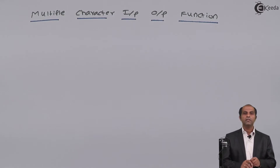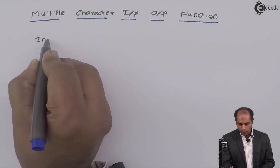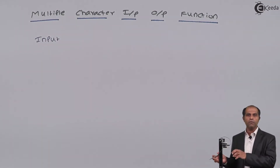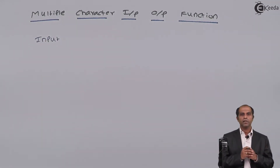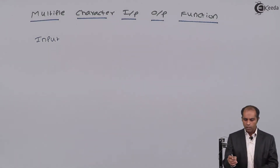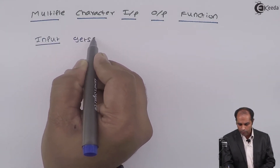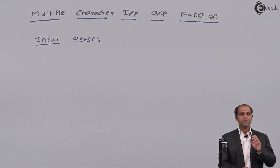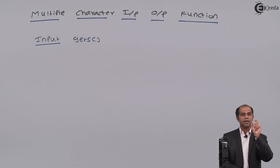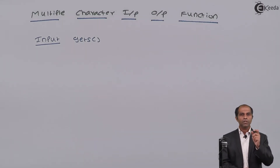The first function is the input function. Input always goes from the device to the memory — from the user to the memory. The function we use for this task is `gets`. What `gets` does is it reads a set of characters and stores them into the variable allocated for that purpose.